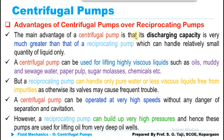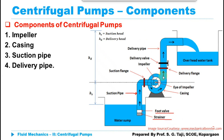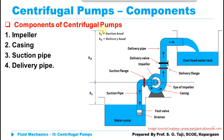The four major important components of the centrifugal pump are: a suction pipe with a foot valve and strainer at the bottom, an impeller fixed inside the casing, and a delivery pipe with a delivery valve. Let's discuss each of these components one by one.